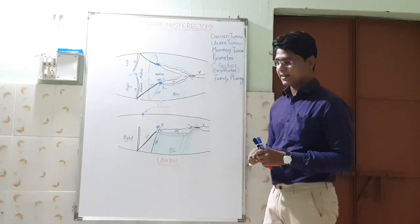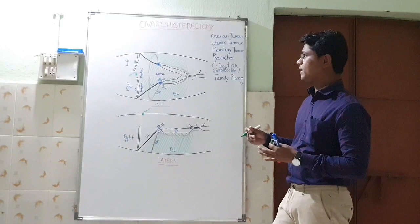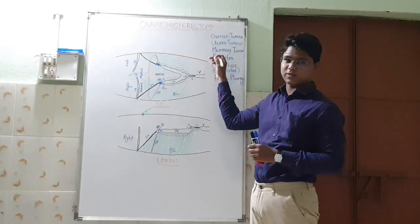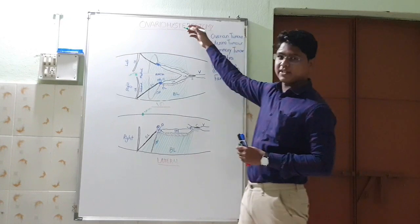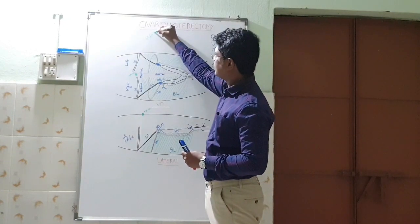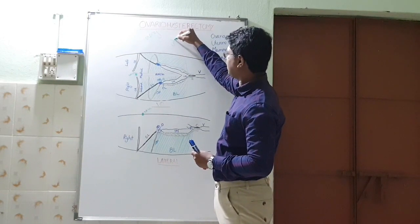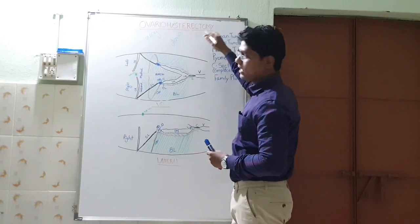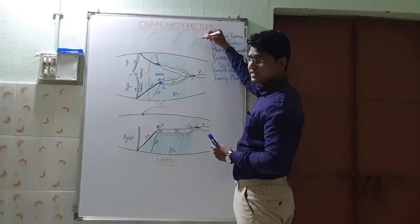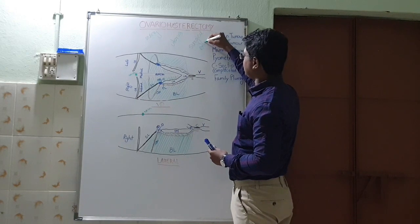Now we will start. Today we will learn about the technique — the word ovariohysterectomy. Ovario means ovary. Hystere means uterus. Ectomy is surgical excision, or surgical removal.